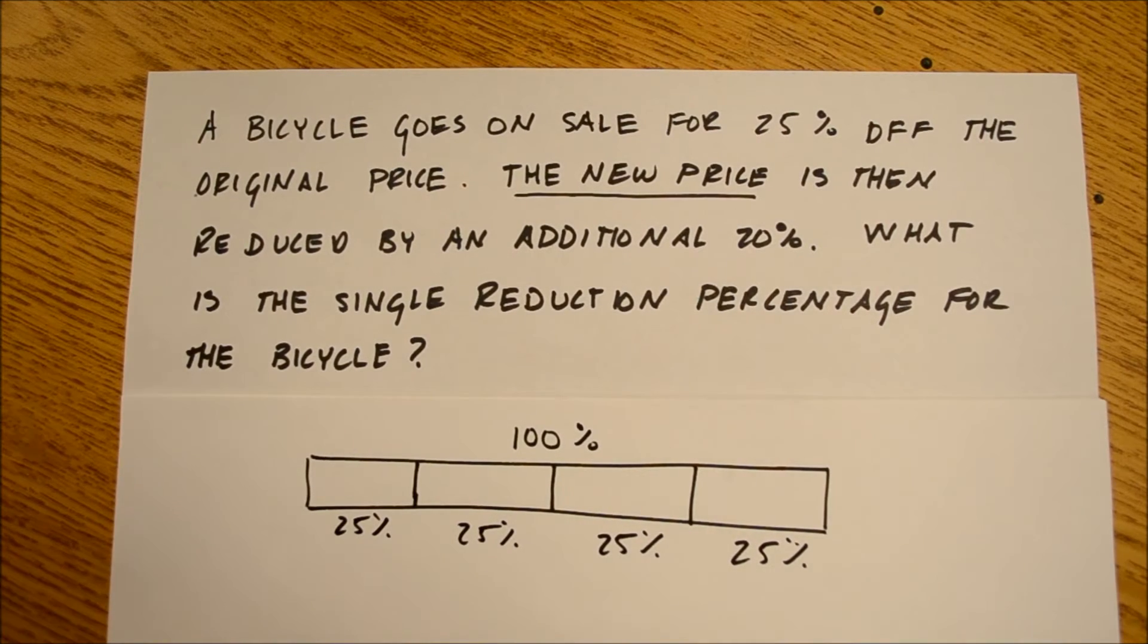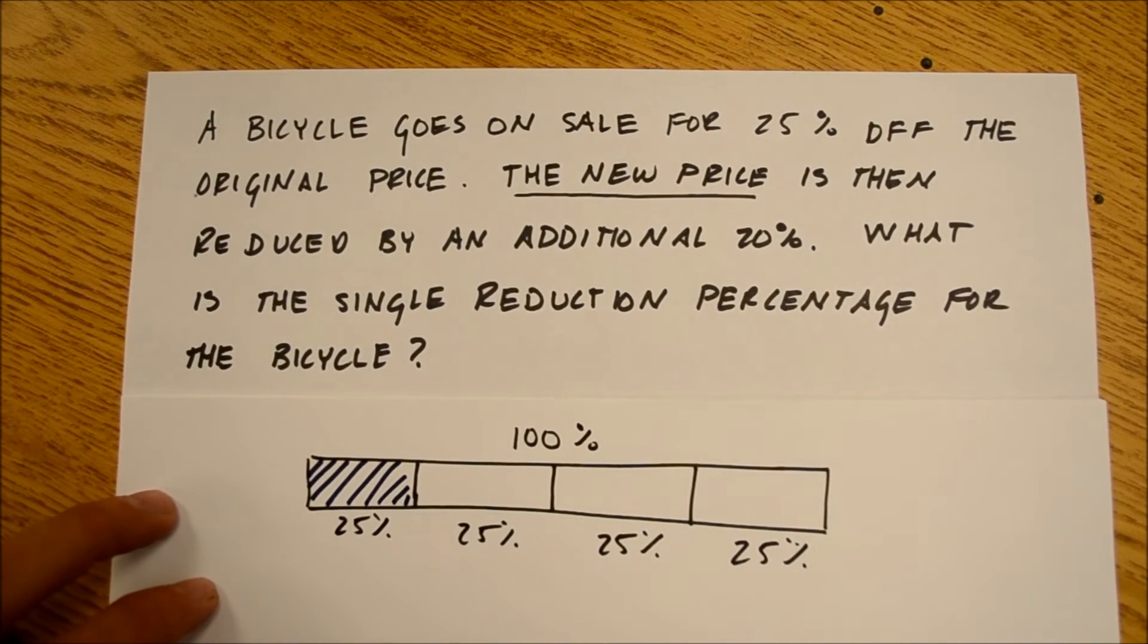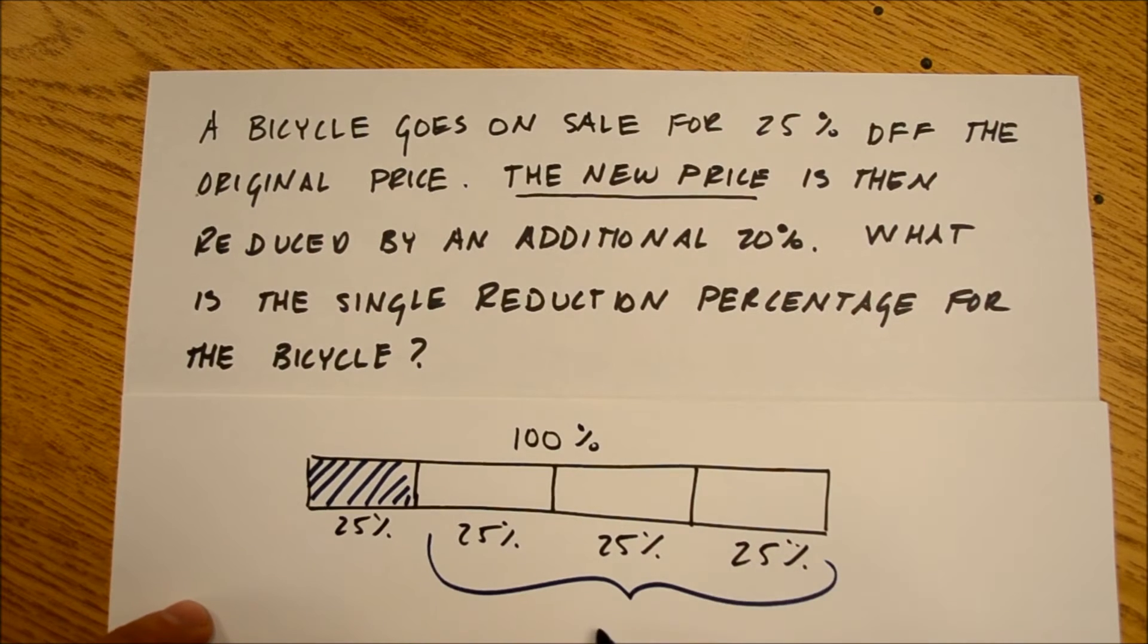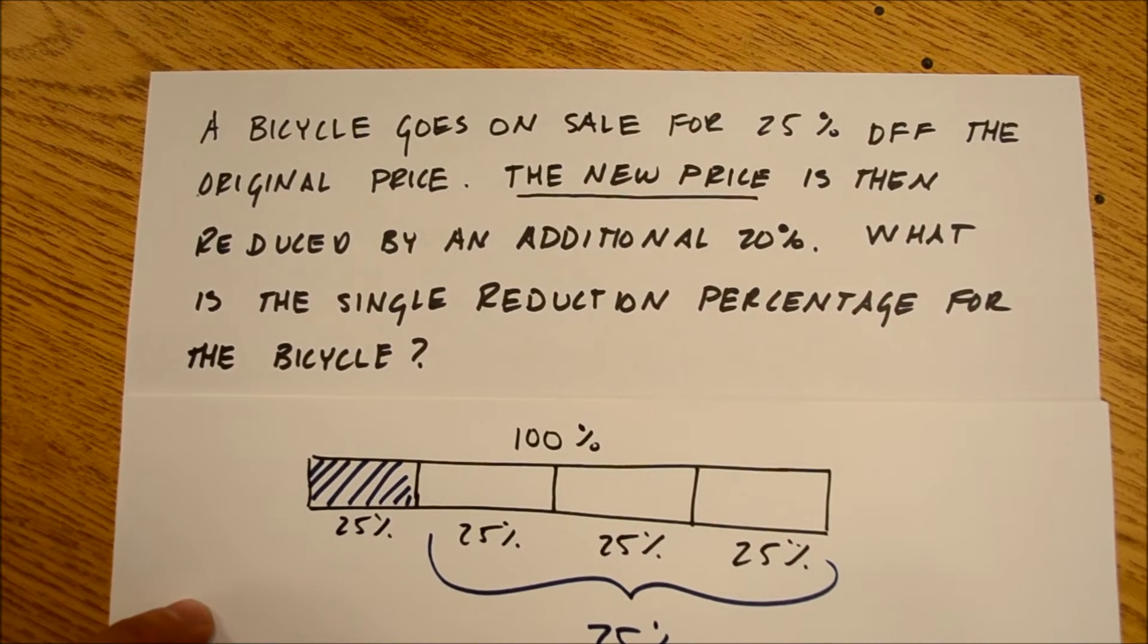To take 25% off, I very simply take 25% off. And what am I left with? 75%. My new price.